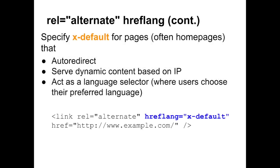If you have a URL that doesn't consistently serve content in one language — perhaps it redirects to different language pages based on the user's IP, or it dynamically serves different language content on the same page, or it's a page which only asks the user to select their preferred homepage — then your hreflang value can be x-default. x-default signals to search engines that the URL's language is broad rather than specific.